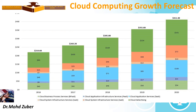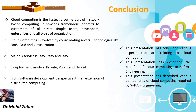Cloud computing growth is very fast. You can see from the graph the growth from 2016 to 2017, 2019, and 2020 — the overall rate is increasing day by day, every year. Cloud computing is the fastest growing part of network-based computing. It provides tremendous benefits to customers of all sizes — simple users, developers, enterprises, and all types of organizations. Cloud computing has evolved by consolidating several technologies like grid, virtualization, and measured services. The three service models are Software as a Service, Platform as a Service, and Infrastructure as a Service. The three deployment models are private, public, and hybrid.